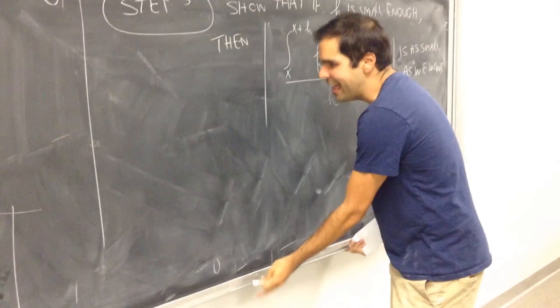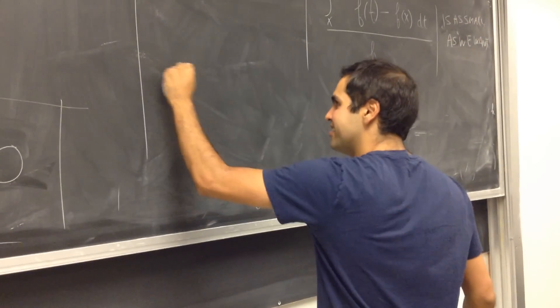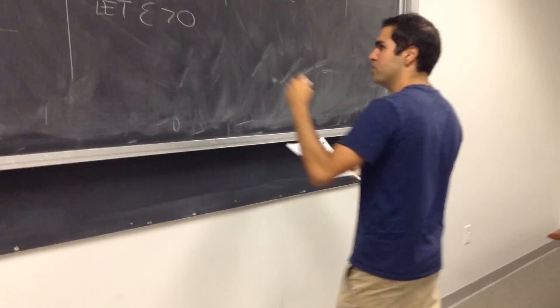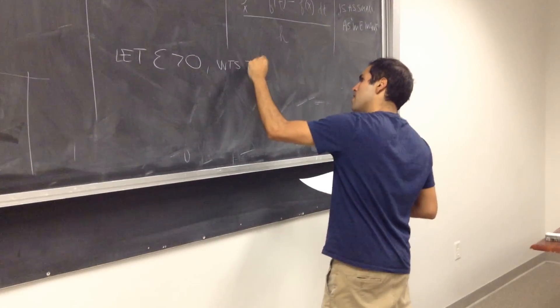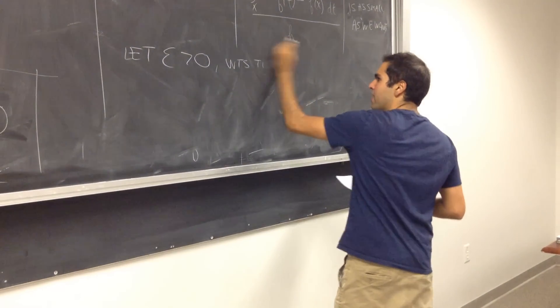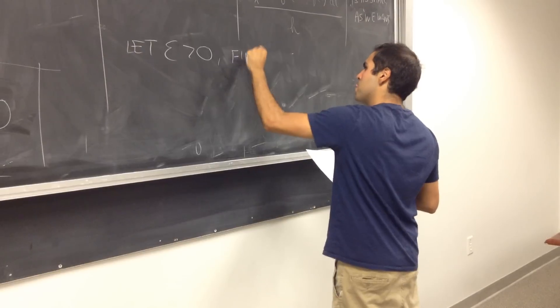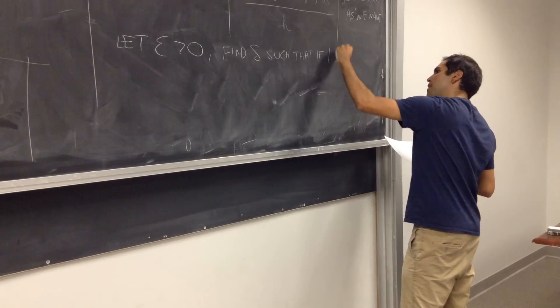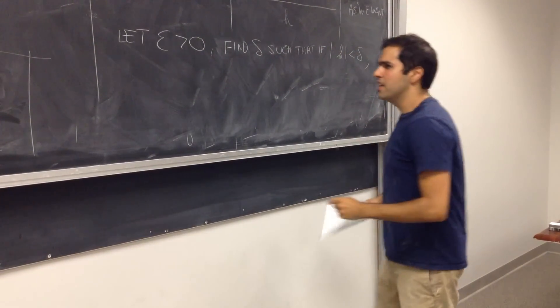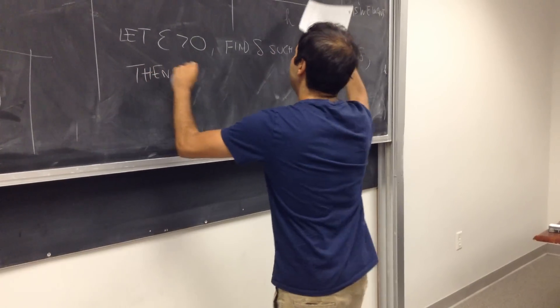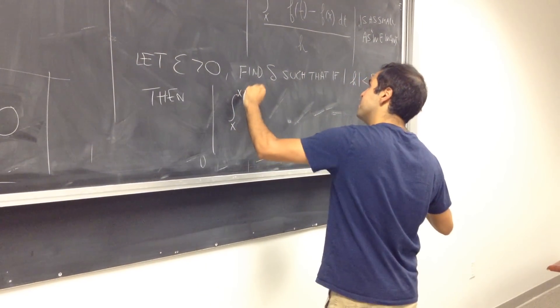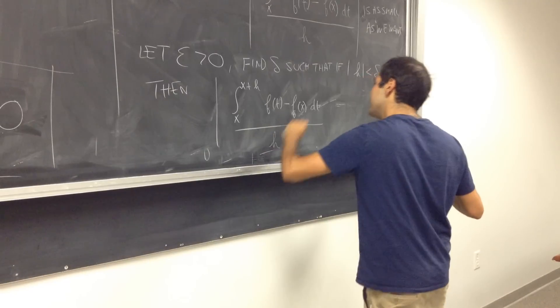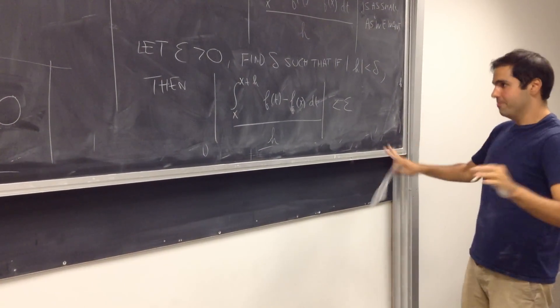So in other words, now let's use epsilon-delta, so here's the abracadabra: let epsilon bigger than zero, and I want to show that we want to find delta such that if absolute value of h is less than delta, then this junk here, integral from x to x plus h f of t minus f of x dt over h, absolute value is less than epsilon.